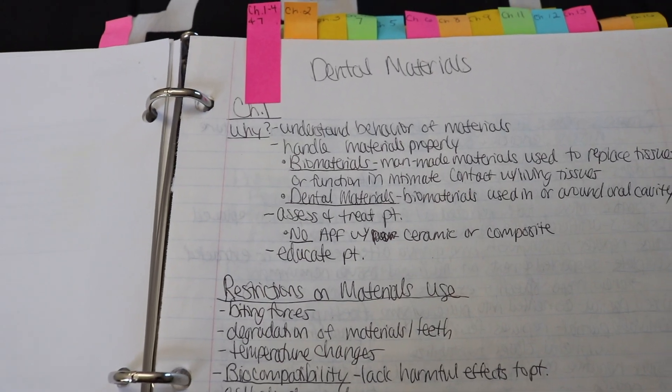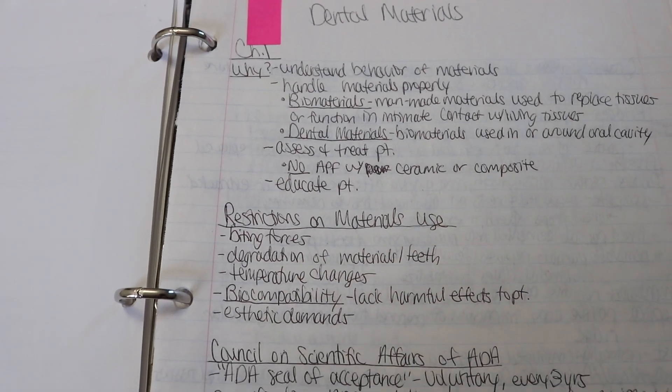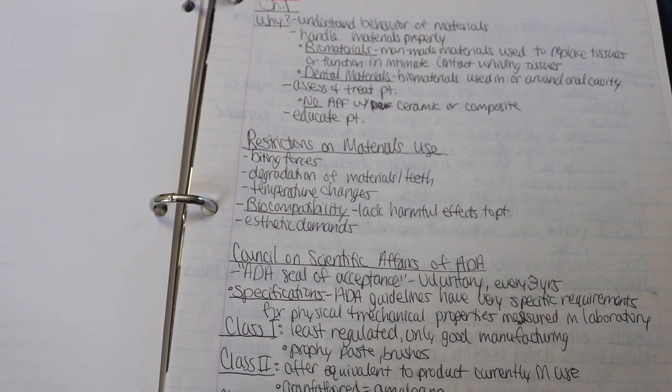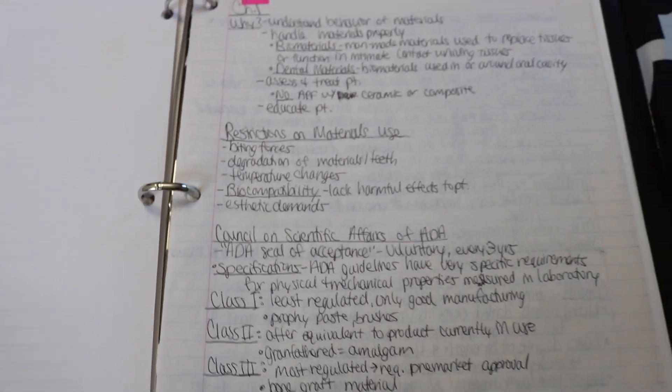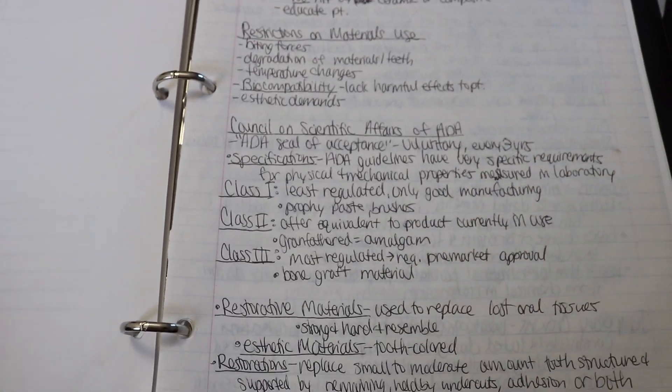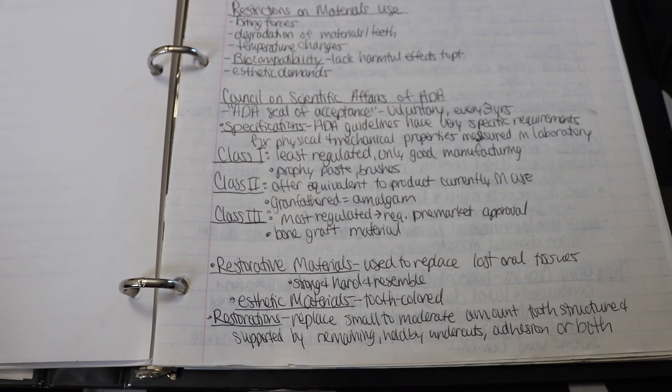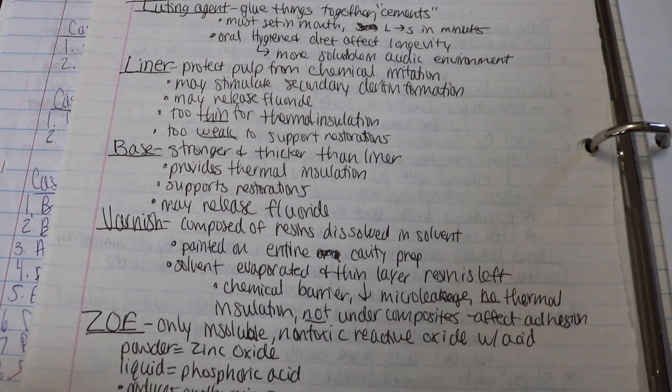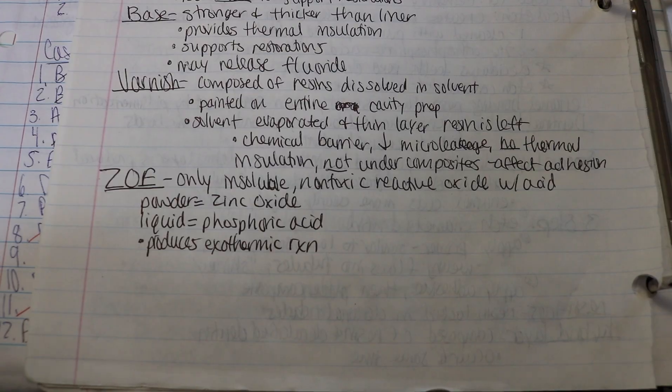So those are all the slides that we have in class and basically what I would do is I would go through and write down all the main points that we went over in class so that I wouldn't forget anything and I would be able to write it out in a way that was easier for me to visually understand. So that was everything for chapter 1 through 4 and also chapter 7.